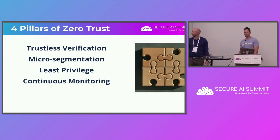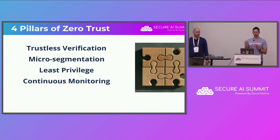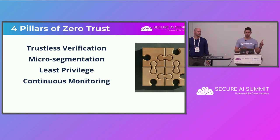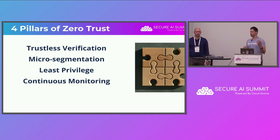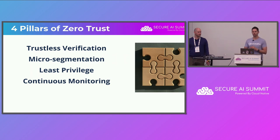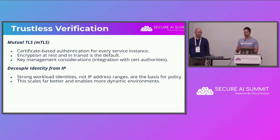The core principles of zero trust are: trust through verification, micro-segmentation — which is different from microservices; just because you have a microservice does not mean you have segmented things — least privilege, and continuous monitoring. A lot of these come out of NIST standards and military protocols, but they are very applicable to what we do today.